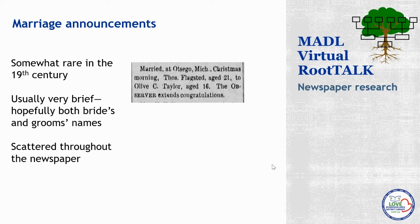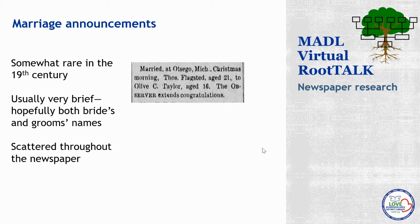Here's a clip from the Montague Observer, January 1st, 1890. In the local news column, we have this: a couple was married at Otsego, Michigan, Christmas morning — Thomas Flagstead, age 21, to Olive C. Taylor, age 16. The Observer extends congratulations. We've got both bride and groom's names, and we have ages which would help us extrapolate back to figure out a birth date. Because this is in the Montague paper, one of these people presumably had a connection to Montague. There are two places to look for actual marriage vital records: Muskegon County or Allegan County, where Otsego is.